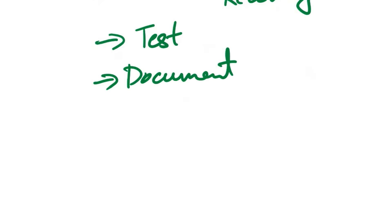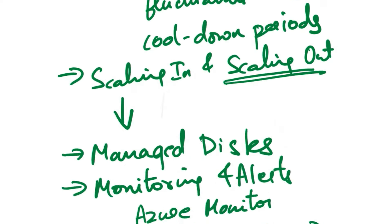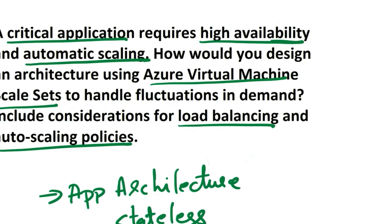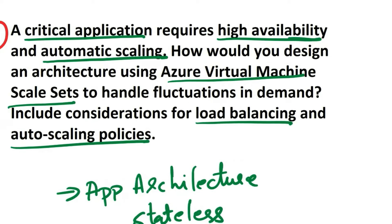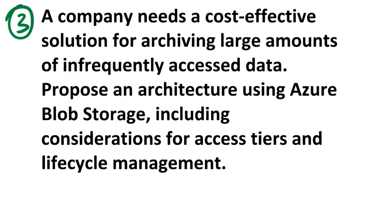Document the architecture, configurations, and procedures for future reference and troubleshooting. By following these steps, you can design an Azure Virtual Machine Scale Sets architecture that ensures high availability and automatic scaling, allowing your critical application to handle fluctuations in demand efficiently. Regularly review and update your configurations based on changes in application requirements and usage patterns.